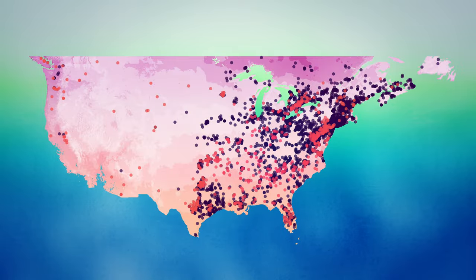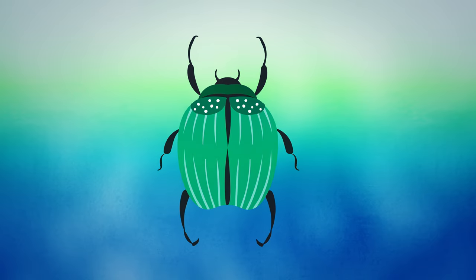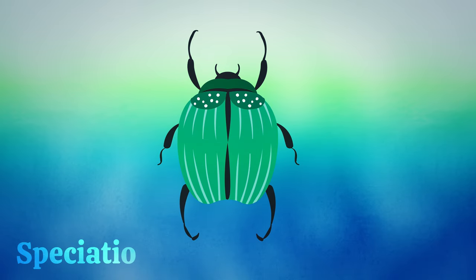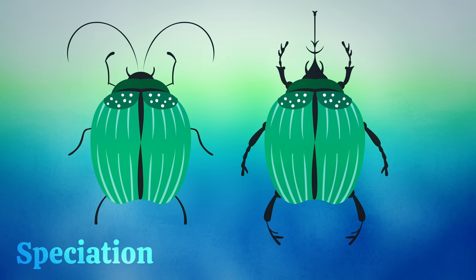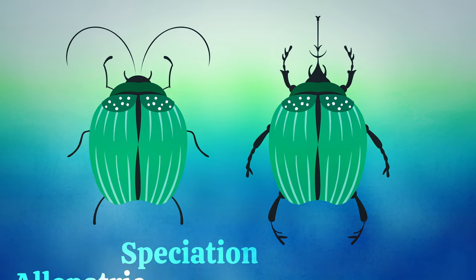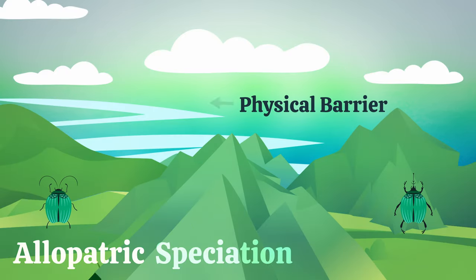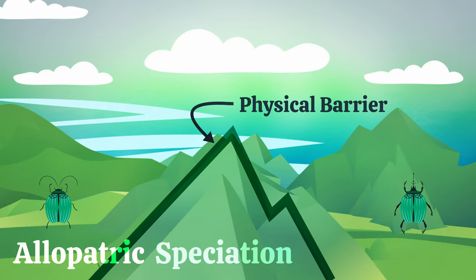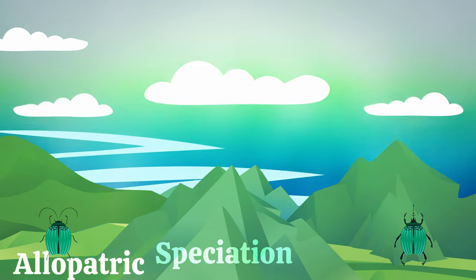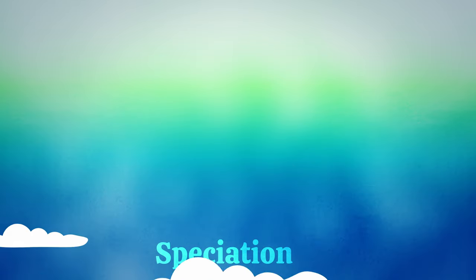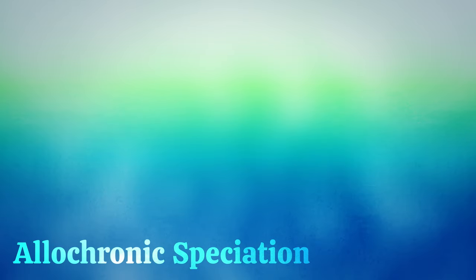In the case of the fall webworm, we know that it's not a case of what's called allopatric speciation. In the simplest terms, speciation is a process whereby one species becomes two. In allopatry, that happens because of some kind of physical barrier between two populations. What we might have instead is something called allochronic speciation.